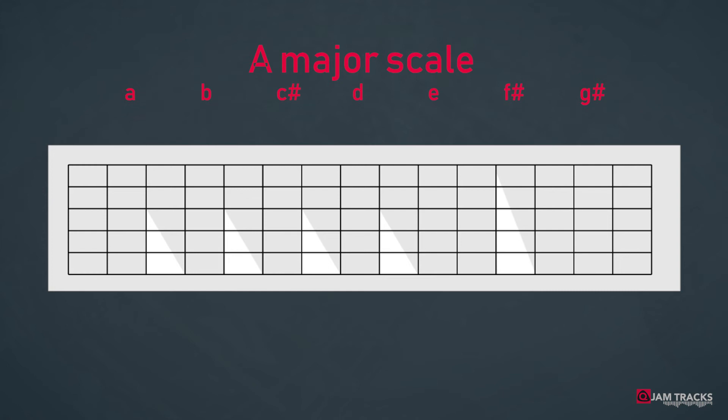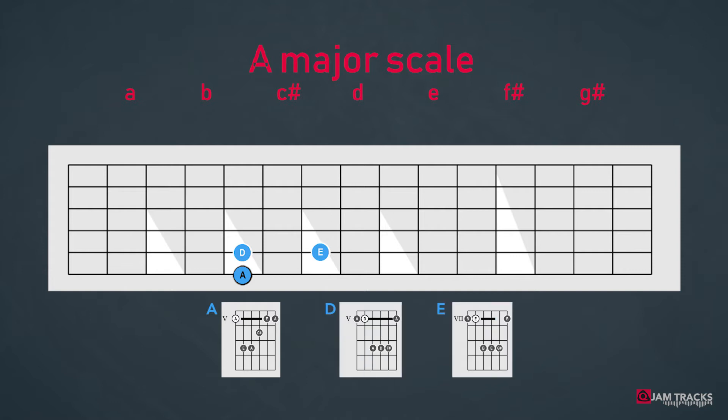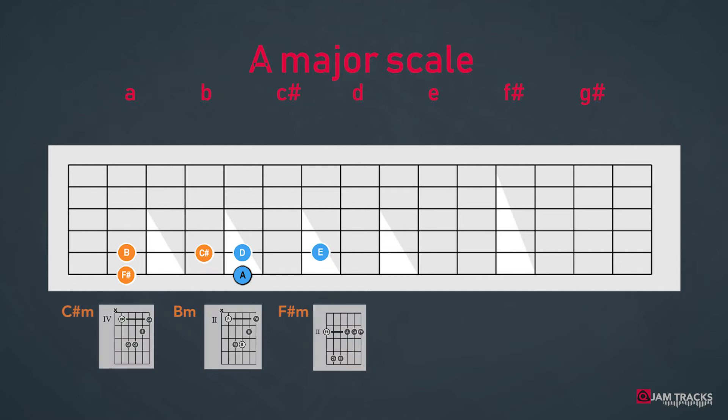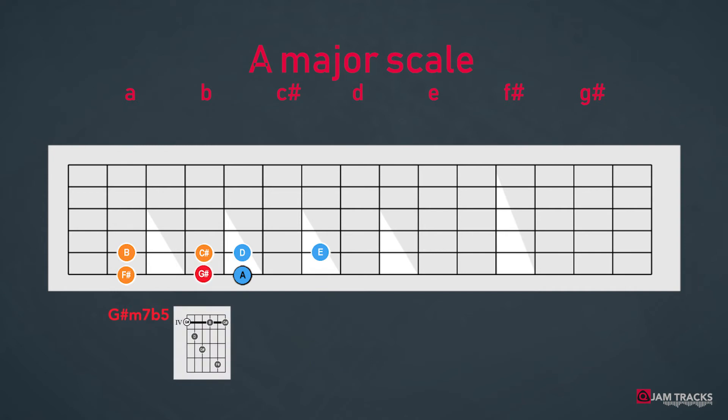So for A major it would be like this. Major triangle, A major, D major and E major. The minor triangle, C sharp minor, B minor and F sharp minor. And the G sharp diminished chord is the last one.